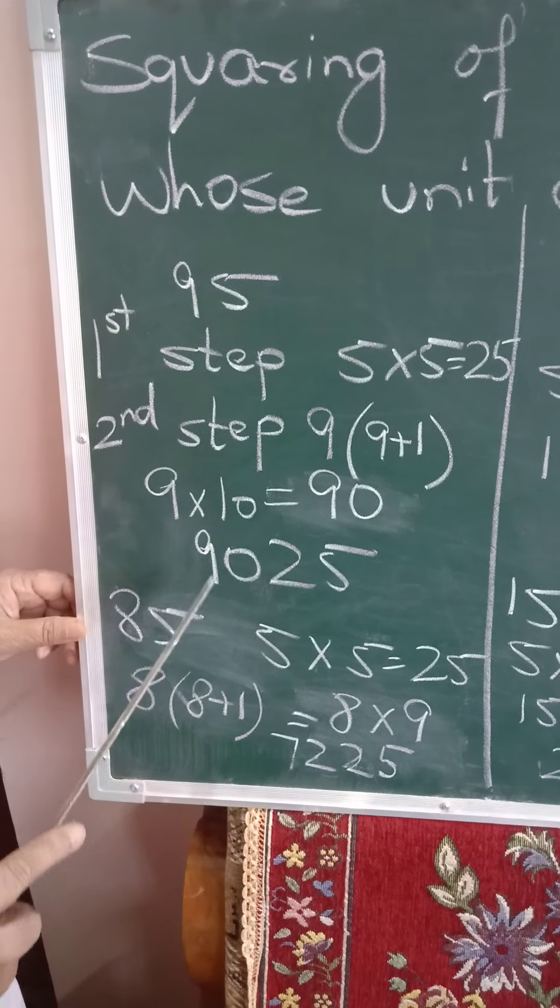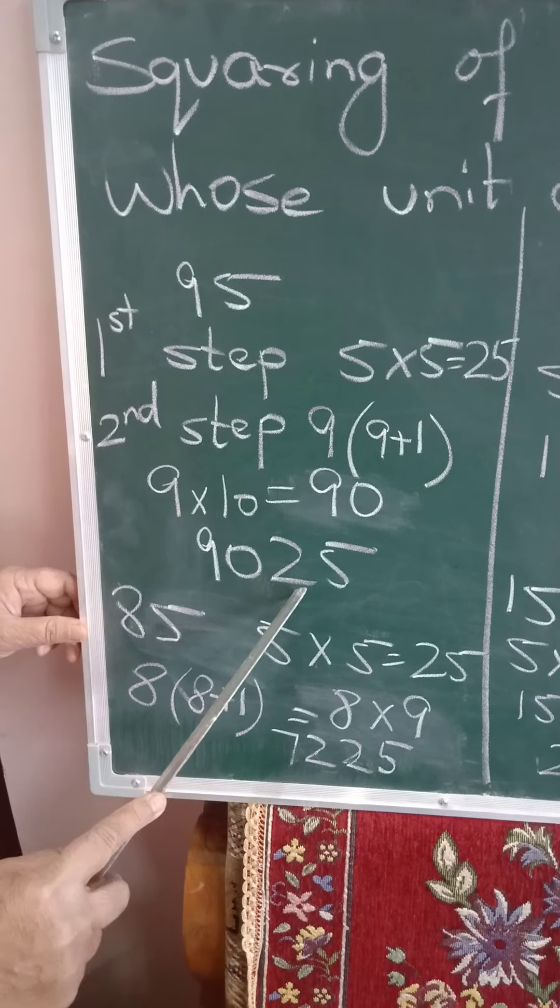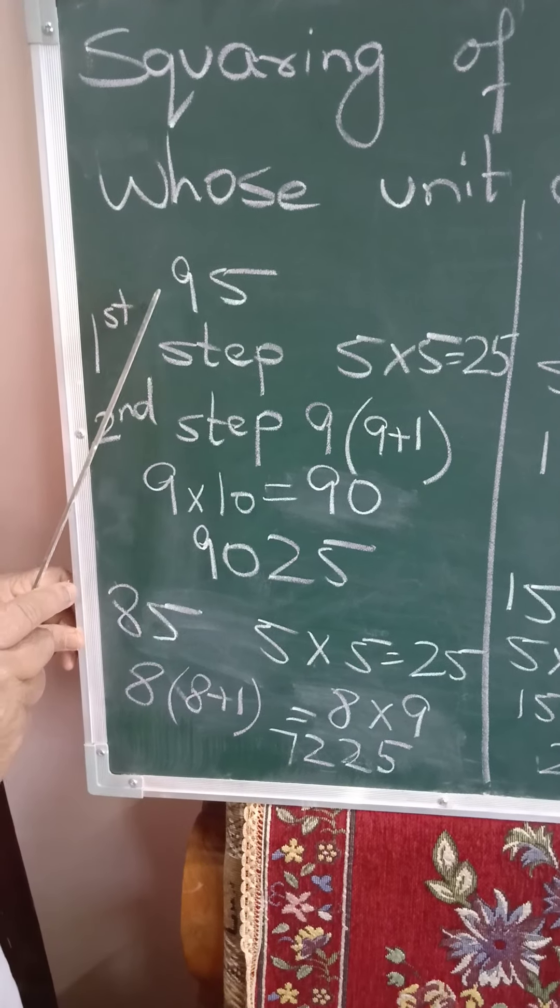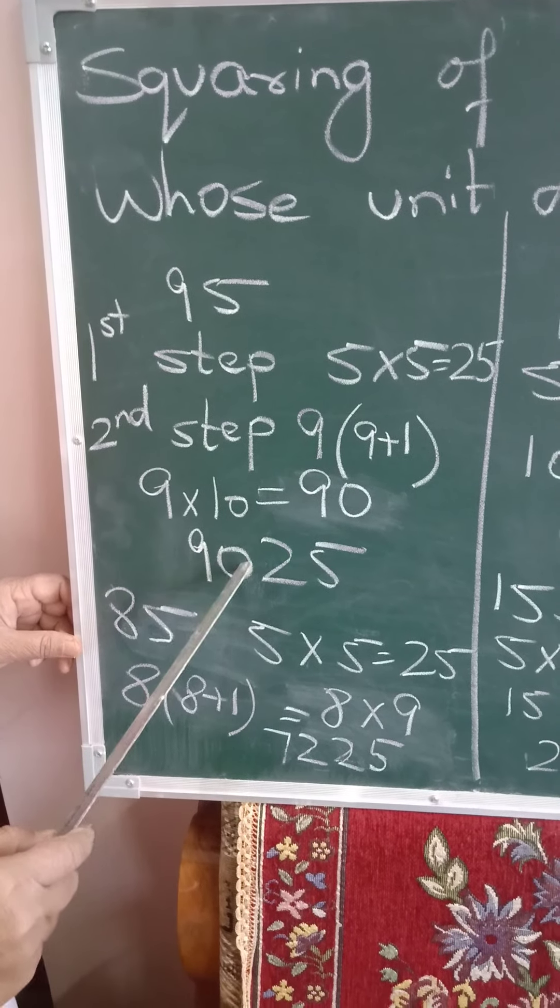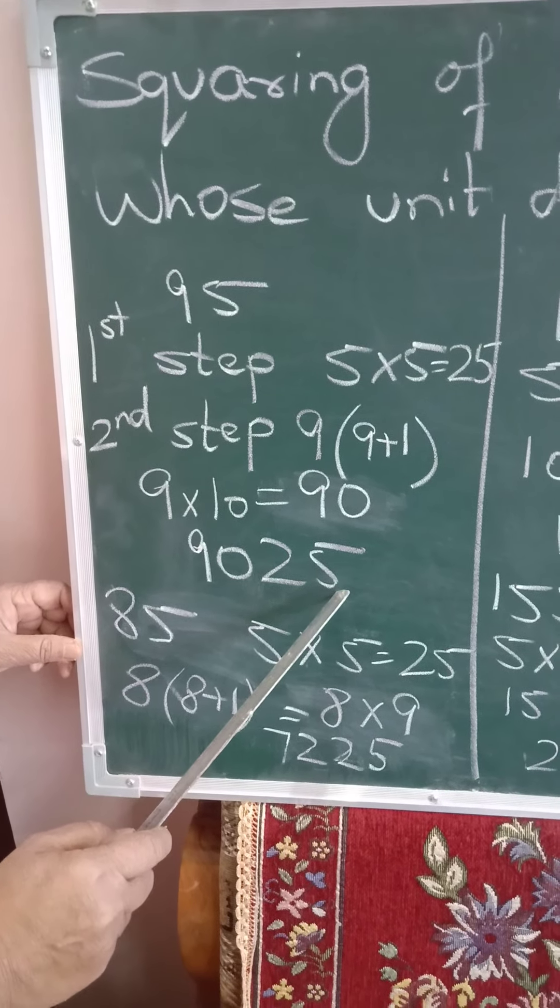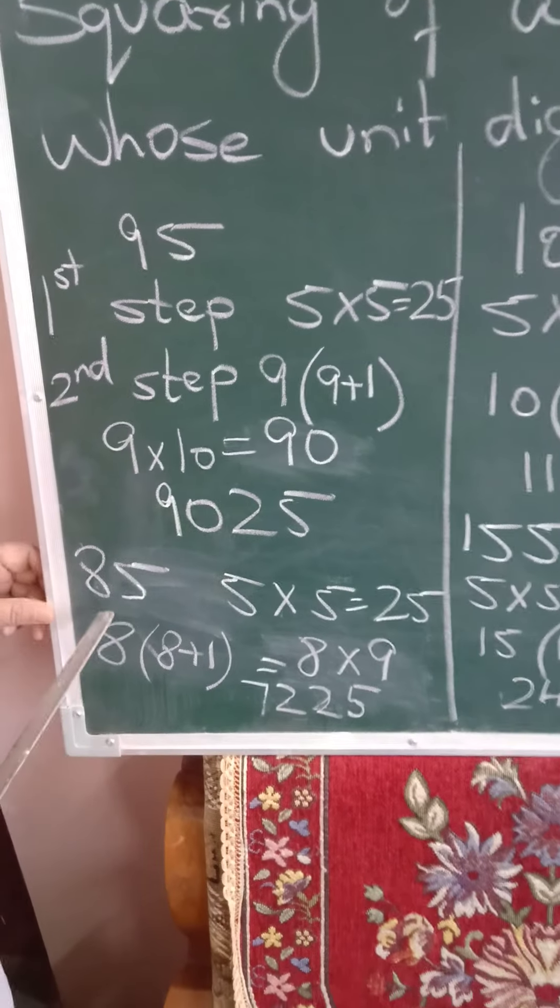So the answer is 9025. Here you can do it orally also. Mentally you can say 5, 5 is 25, 9, 10 is 90. So 9025 is the answer. Here you can see the second example, 85.